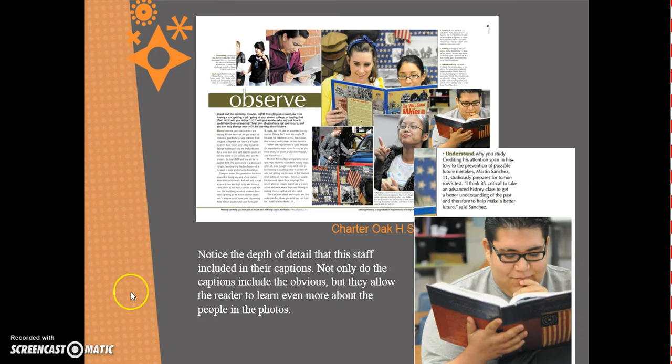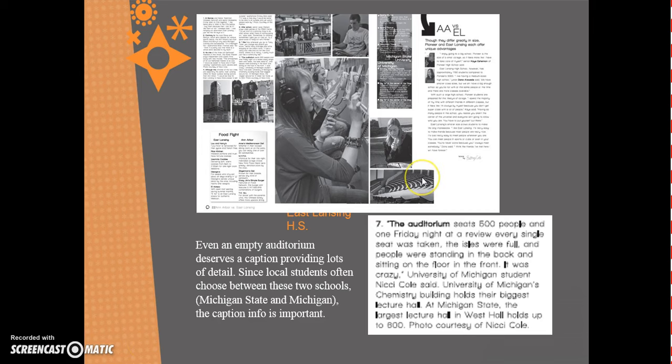Even an empty auditorium deserves a caption providing lots of detail. Since local students often choose between Michigan State and Michigan, the caption information is important. It says: 'The auditorium seats 500 people, and one Friday night at a review, every single seat was taken. The aisles were full and people were standing in the back and sitting on the floor in the front. It was crazy,' University of Michigan student Nicole Cole said. University of Michigan's chemistry building holds their biggest lecture hall. At Michigan State, the largest lecture hall in West Hall holds up to 800 people. They're talking about which school people will go to and planning for college.